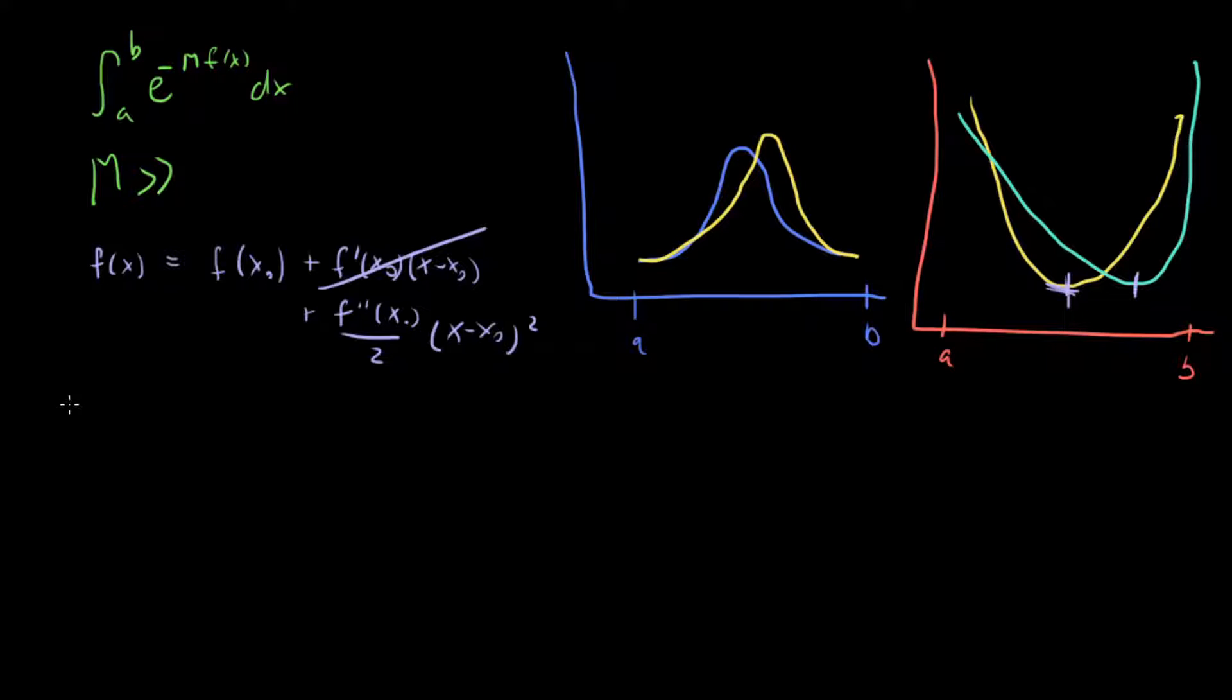In that case, our integral - the integral from a to b of e^(-m*f(x))dx - is approximately equal to the integral of e^(-m*f(x₀) - f''(x₀)/2(x - x₀)²)dx. Okay, this is our approximation.